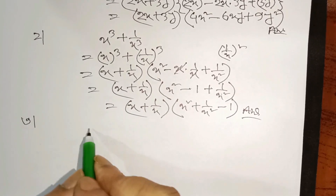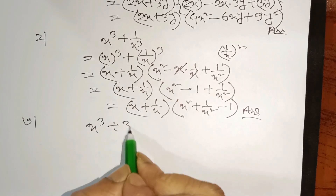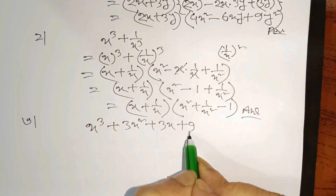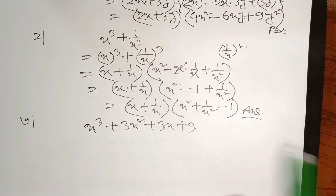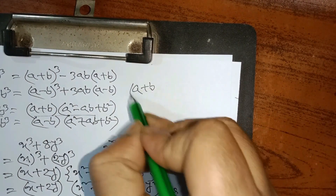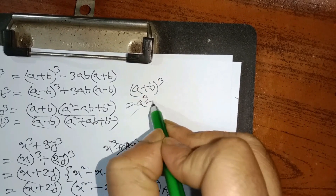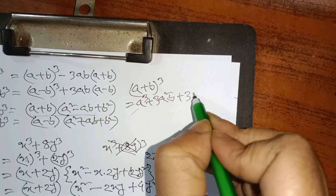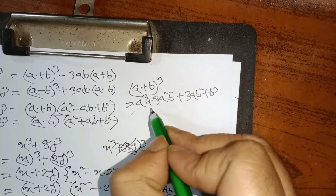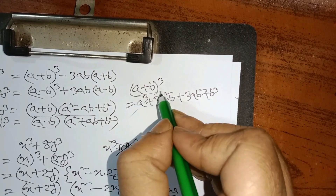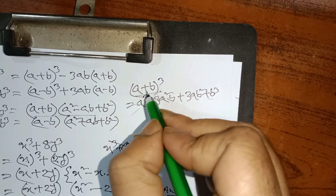Three numbers: x cube plus 3x squared plus 3x plus 9. a cube plus 3a squared b plus 3ab squared plus b cube — like this is the same one. The same one with the same one.